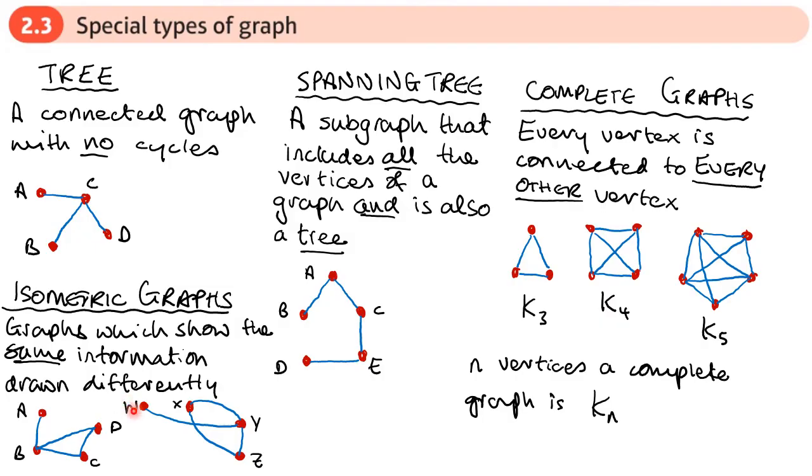So for example, I can match up vertex W with vertex A, which has a valiancy of one. That's connected to a vertex here that has a valiancy of three. That would be B. And then you can see B is connected to two other vertices that have a valiancy of two. So this one and this one. So this is the same information as this.